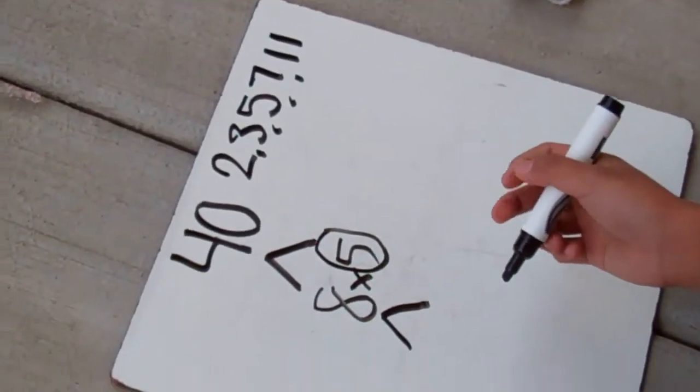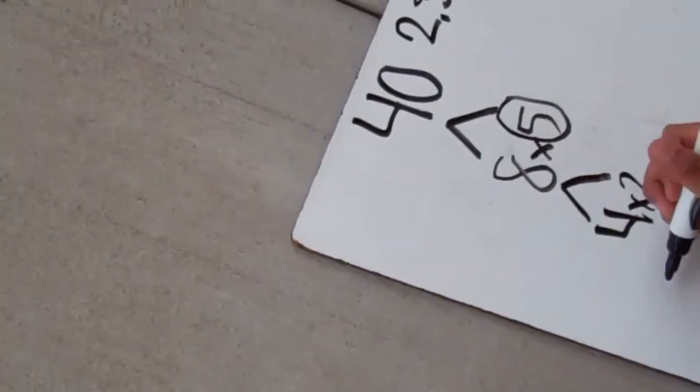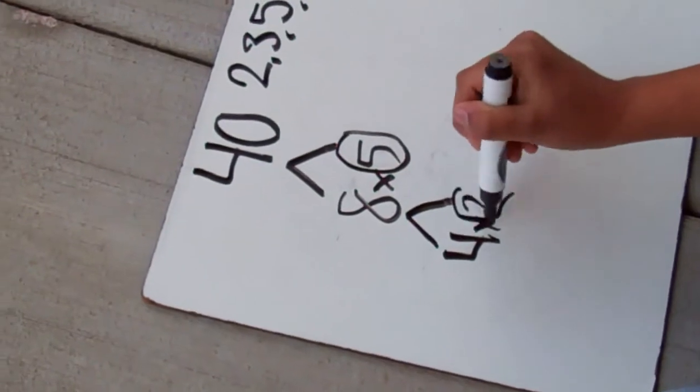So let's think. What equals eight? Four times two. So are any of these prime numbers? Let's check. Yes, it's the two.